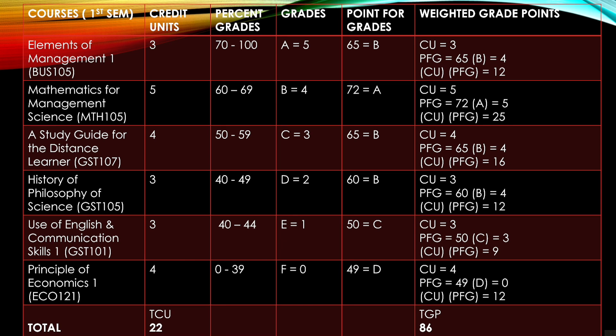Now for the percentage grade — a range of numbers are grouped and identified by letter grades. We have 70 to 100 which is an A. So if a student's exam score is between 70 and 100, that is an A for that course. The grading for 60 to 69 is a B. For 50 to 59 that's a C. For 40 to 49 is a D. Then 40 to 44 is an E. Then 0 to 39 is an F.